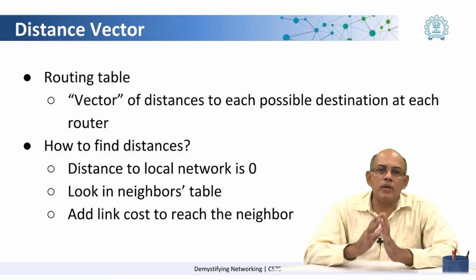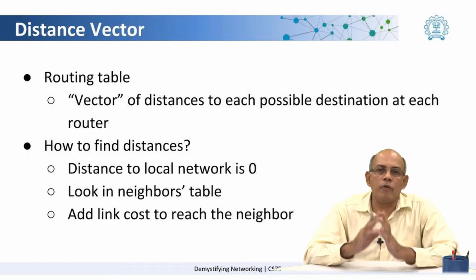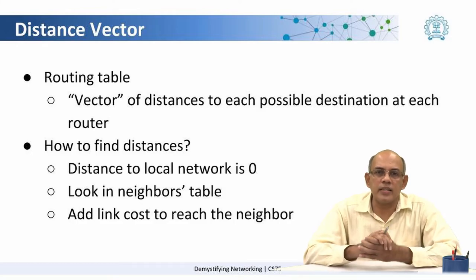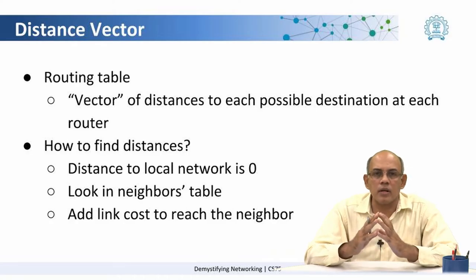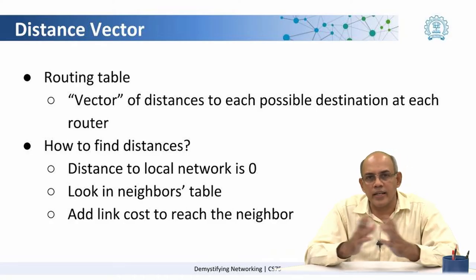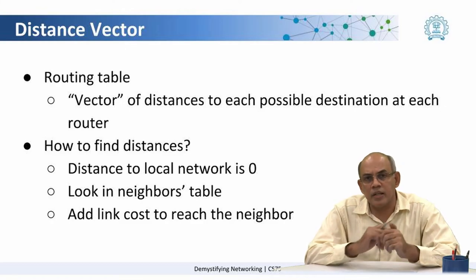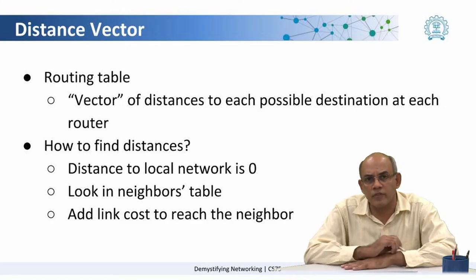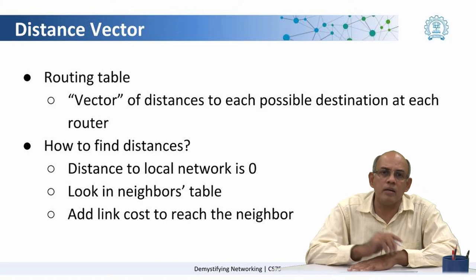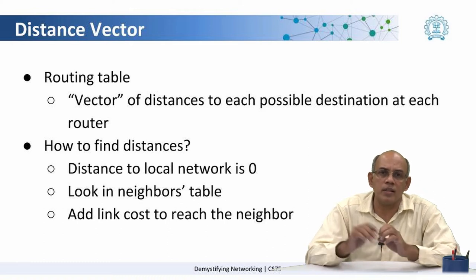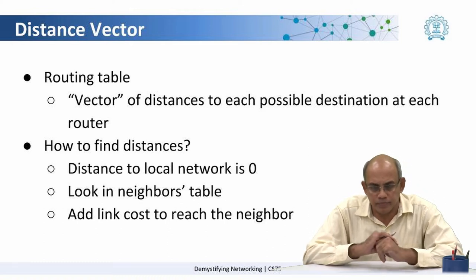One example of such link state routing is called the open shortest path first algorithm, or OSPF. Now, let us look at an example of how the distance vector algorithm works. The basic idea is that each router has a routing table, which is nothing but a vector of distances to every other router that it knows of in the network.